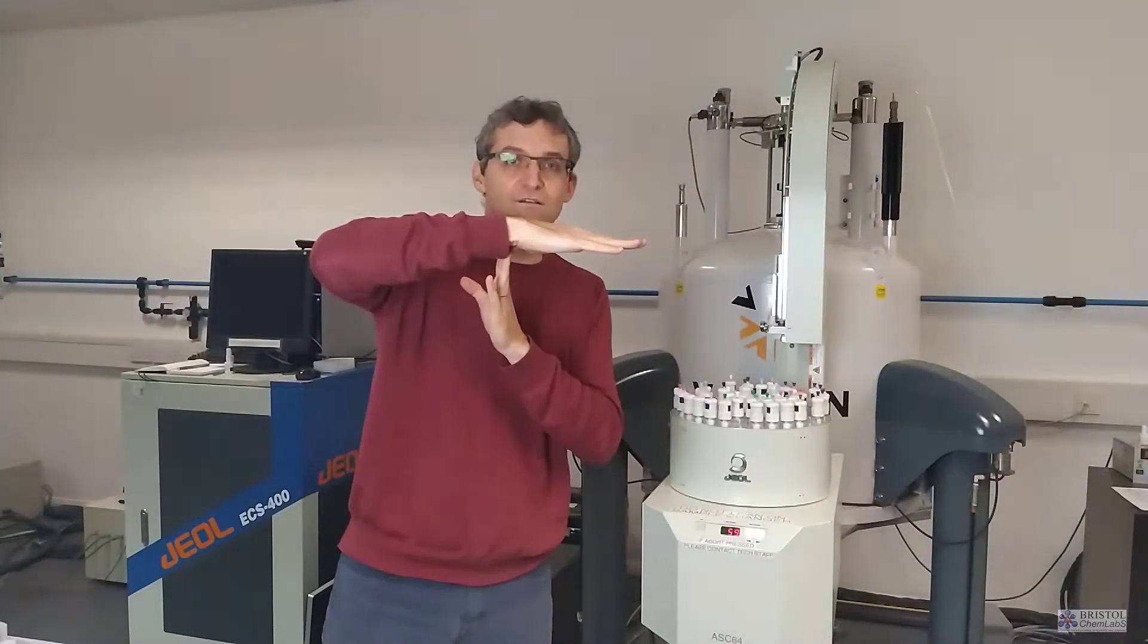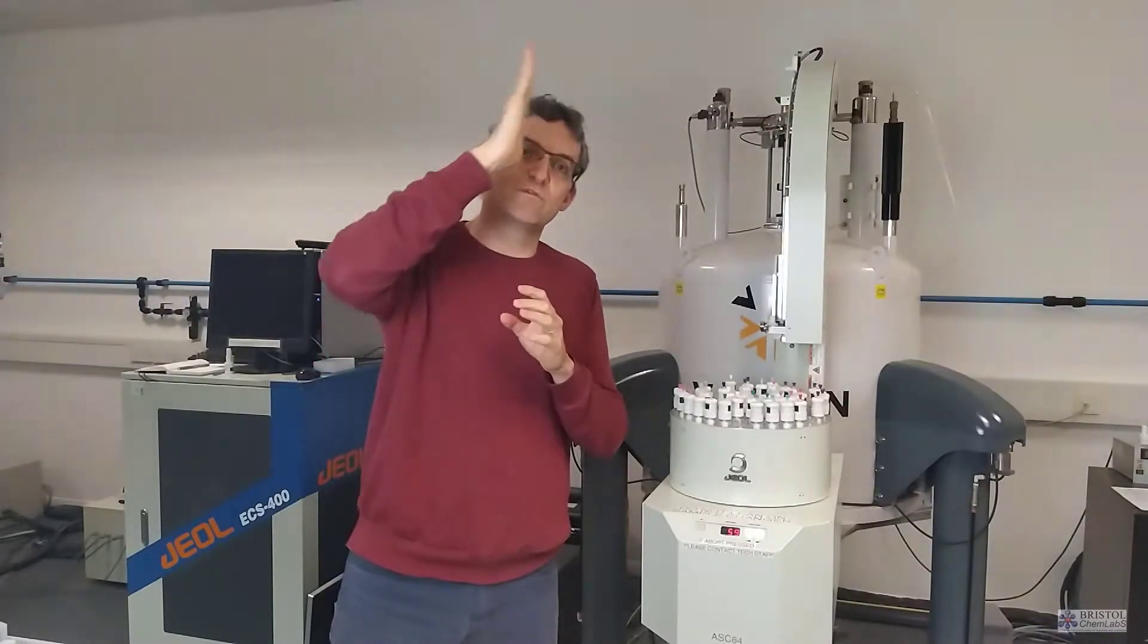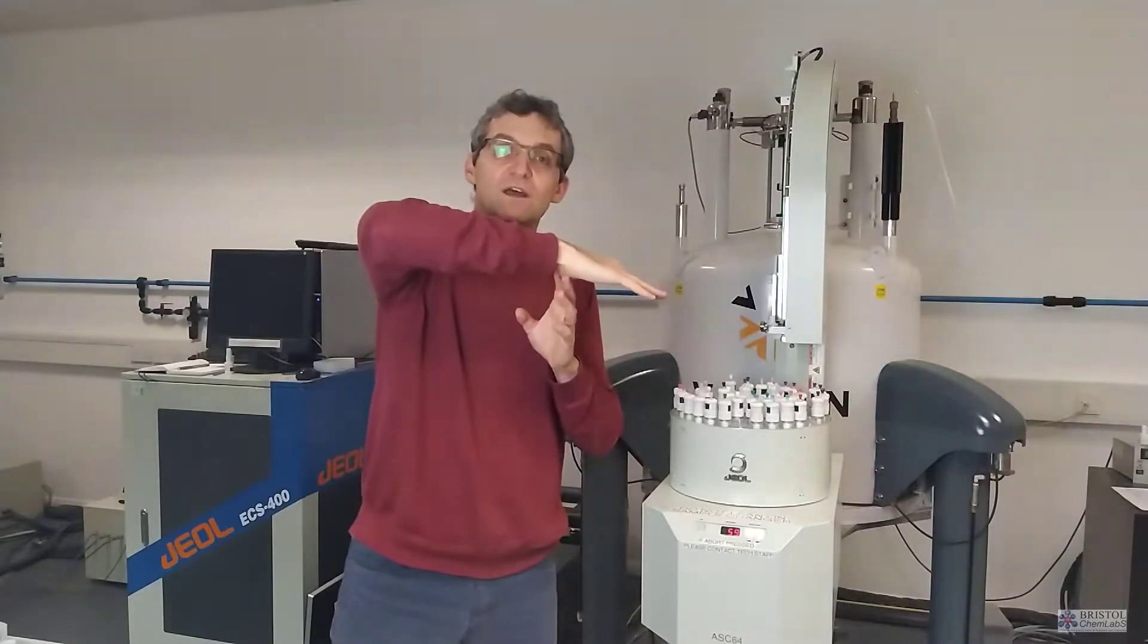In NMR spectroscopy, all we do is smack the hydrogen nuclei with radio frequency pulses, knock them out of alignment with the magnetic field, and then we listen to the signal as they relax and align back up with the field. We're putting them into a very high energy state, out of alignment with the field, and then they relax back into alignment with the magnetic field and release that energy. And we measure that energy as it gets released.